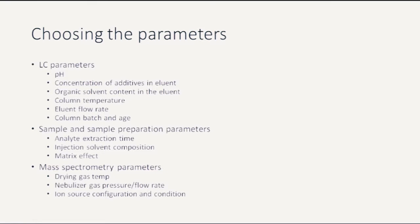As a reminder, there was a list of LC parameters, sample and sample preparation parameters, and also mass spectrometric parameters. Because of a very large number of potentially variable parameters, it is reasonable to divide assessment of ruggedness into separate parts.